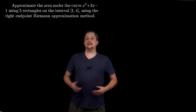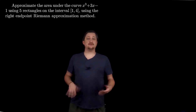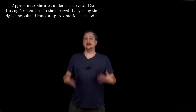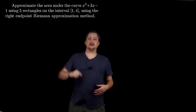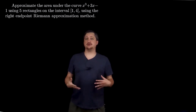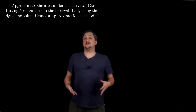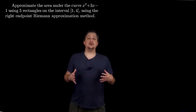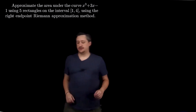In this example we're going to be doing the area under the curve. In particular we want to approximate the function x cubed plus 3x minus 1 — the area under that curve using five rectangles on the interval 1 to 4. And in particular we want to use the right endpoint approximation method.